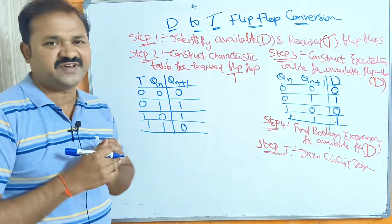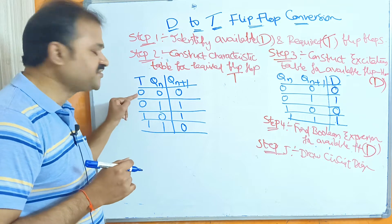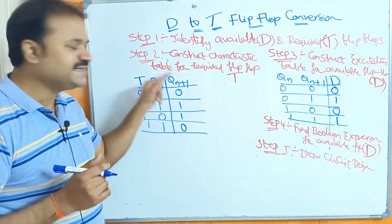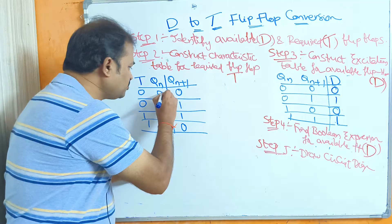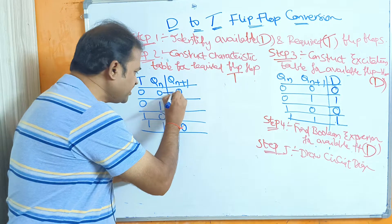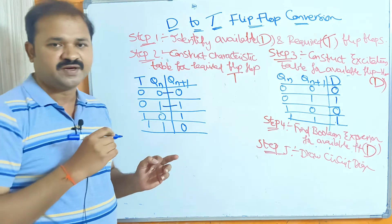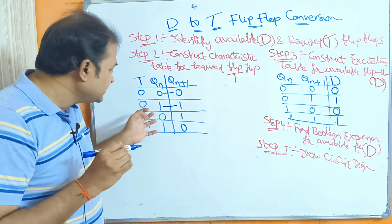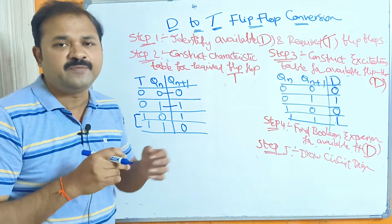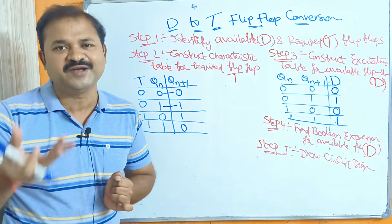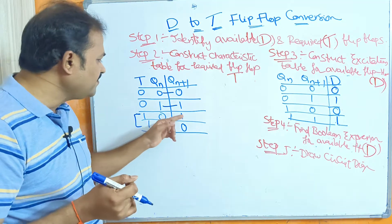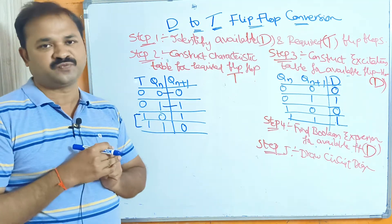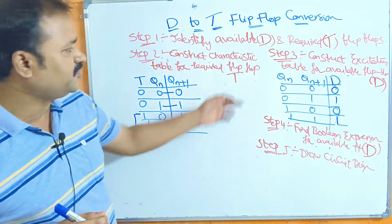The logic for the T flip-flop characteristic table is simple. If T is 0, then Qn+1 is the same as Qn — no change. If T is 1, then Qn is complemented, i.e., toggled: 0 becomes 1 and 1 becomes 0. This completes the characteristic table.